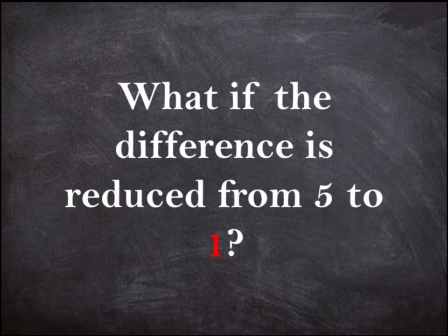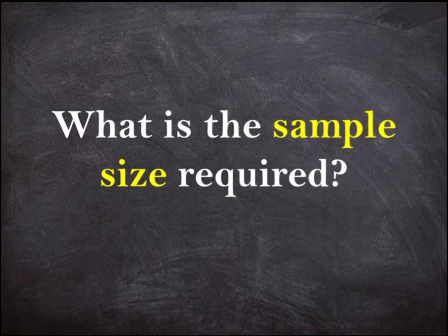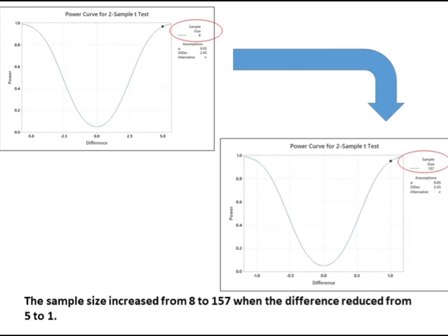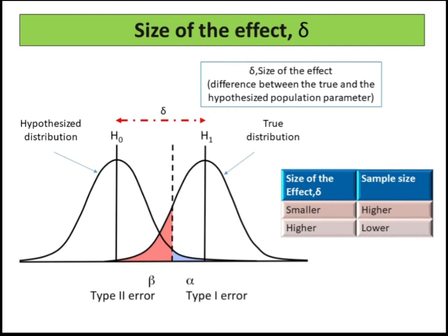What if the difference is reduced from 5 to 1? What is the sample size required? Let's change the difference from 5 to 1 in Minitab. The sample size increased from 8 to 157 when the difference reduced from 5 to 1. Larger sample sizes are required to detect very small differences between the hypothesized and actual values of the population parameter.